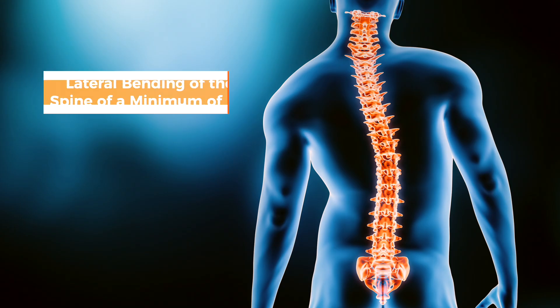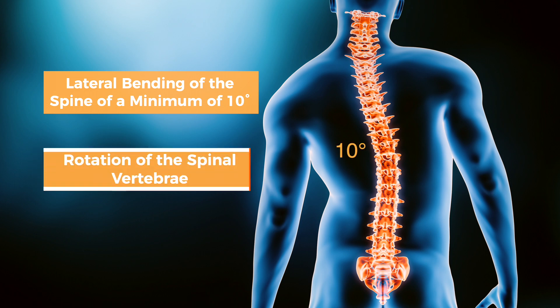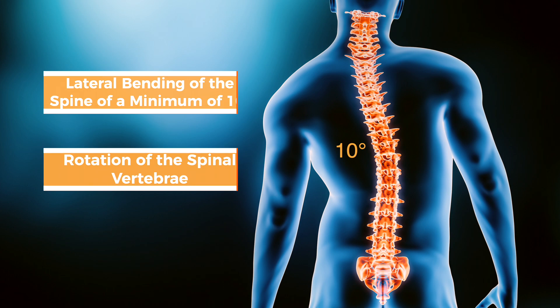A brief overview of what scoliosis is: scoliosis is defined by a lateral bending of the spine at a minimum of 10 degrees with rotation. Those are the two things that we need to actually diagnose scoliosis — a lateral bending of at least 10 degrees and rotation of the spine.